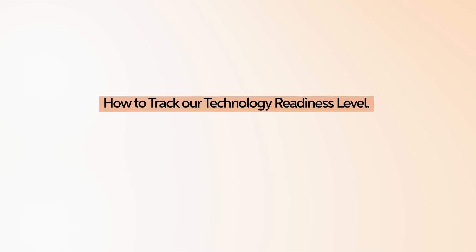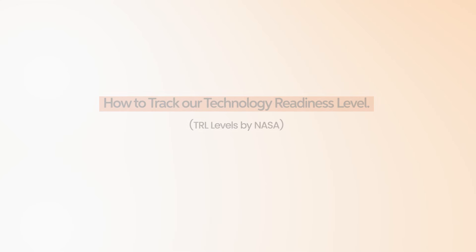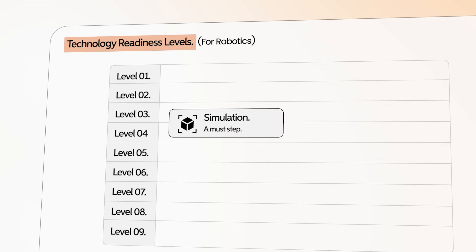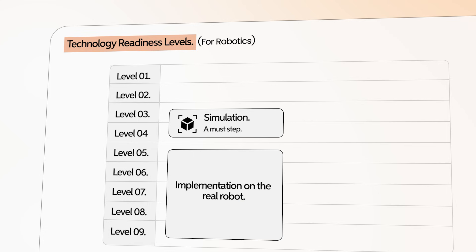In this video, we are going to be discussing how to track our technology readiness level — TRL levels by NASA. In TRL for robotics, I found that simulation is a must-step at TRL 3 or 4. Then TRL 5, 6, 7, 8, 9, there is implementation on the real robot. And when I understood this, it totally changed the projects that I target and the things I need to work on to get to bigger TRL level projects.